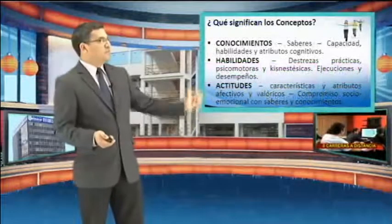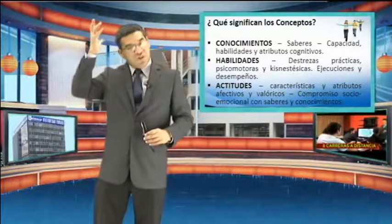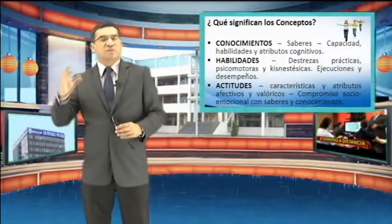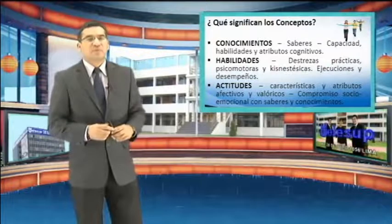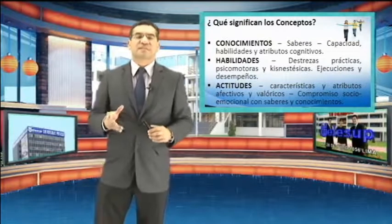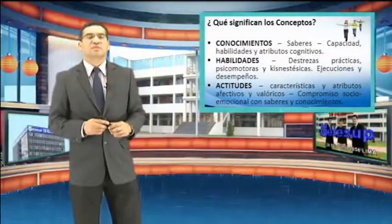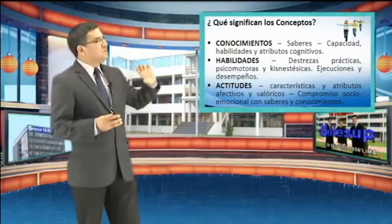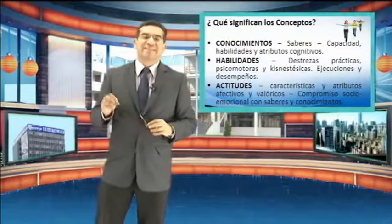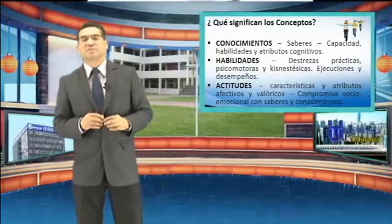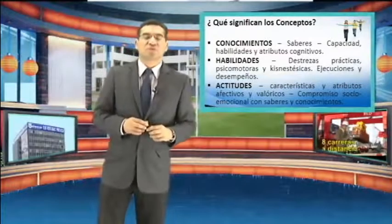Los tres saberes son: conocimientos, que son factores cognitivos que el ser humano debe manifestar; habilidades, que incluye destrezas prácticas, psicomotoras, kinestésicas, ejecuciones y desempeños; y actitudes, que son características, atributos afectivos y valorativos, compromisos emocionales con saberes y conocimientos.